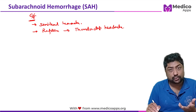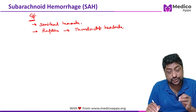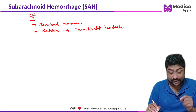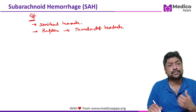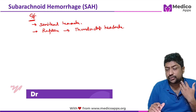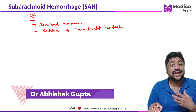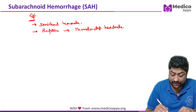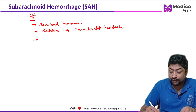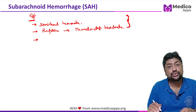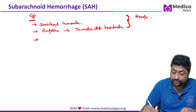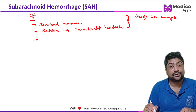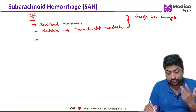The most important cause of thunderclap headache is subarachnoid hemorrhage. Other symptoms include projectile vomiting, nuchal rigidity, stupor, and coma depending on the extent of bleeding. The excruciating pain occurs because the blood bleeds into the meninges, irritating them — hence causing so much pain.